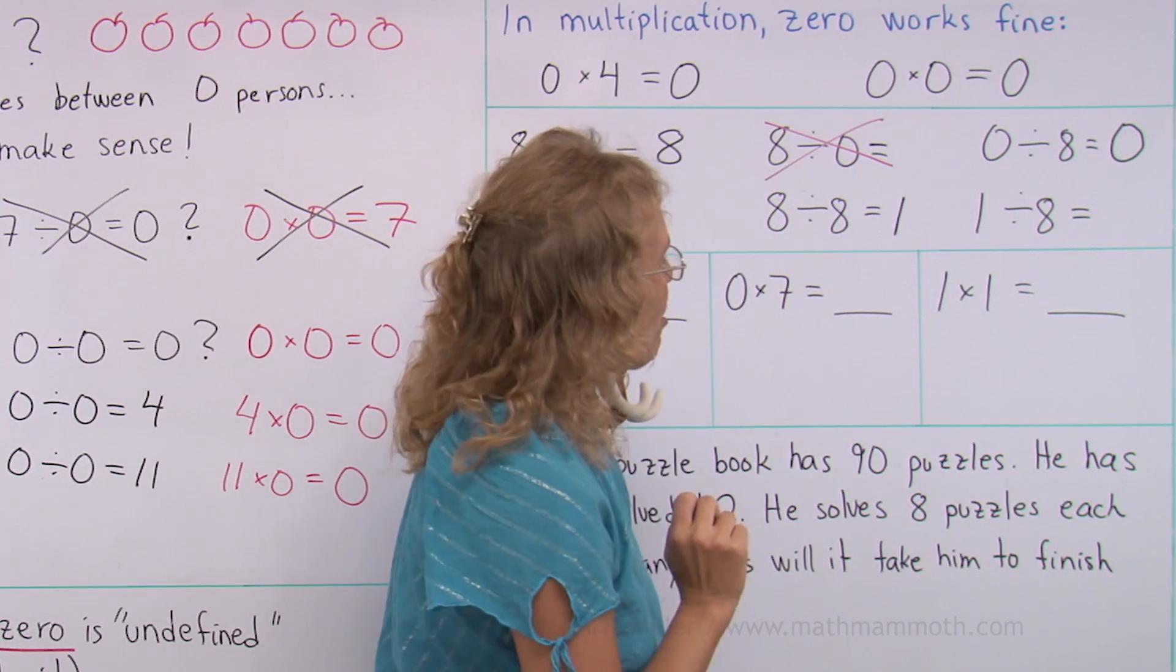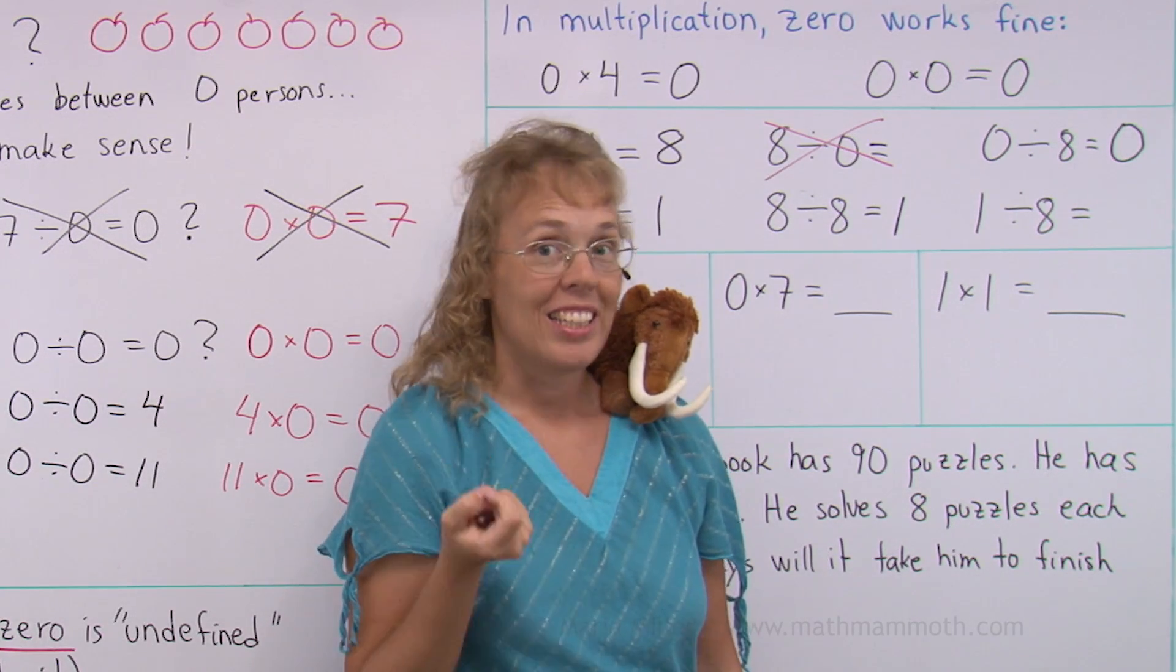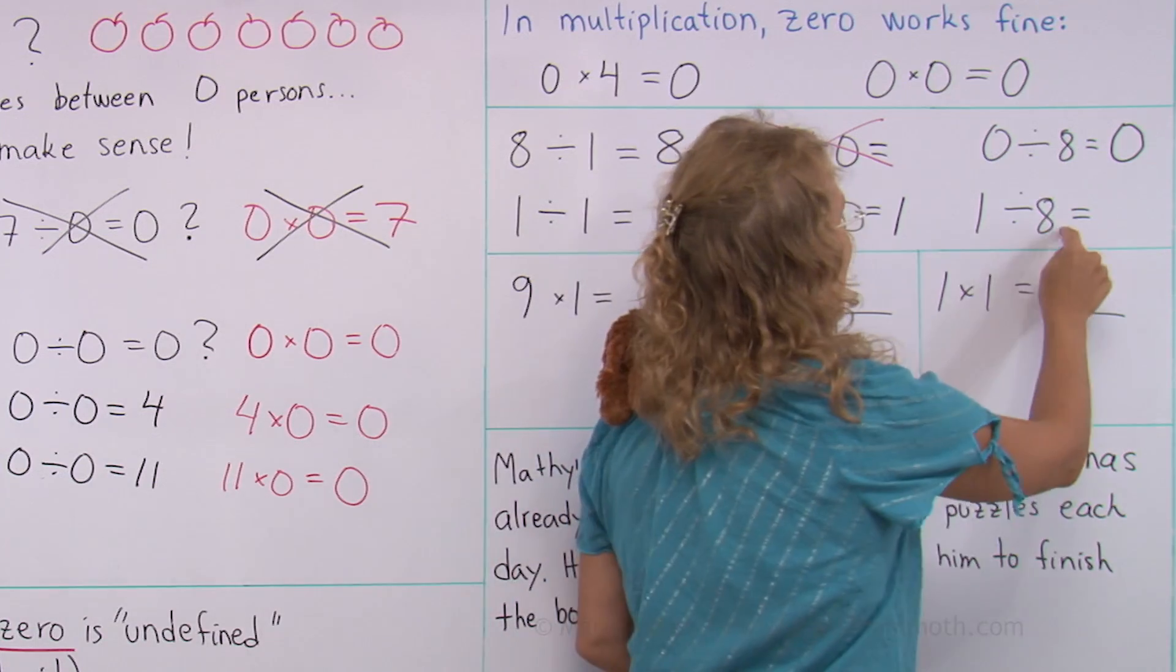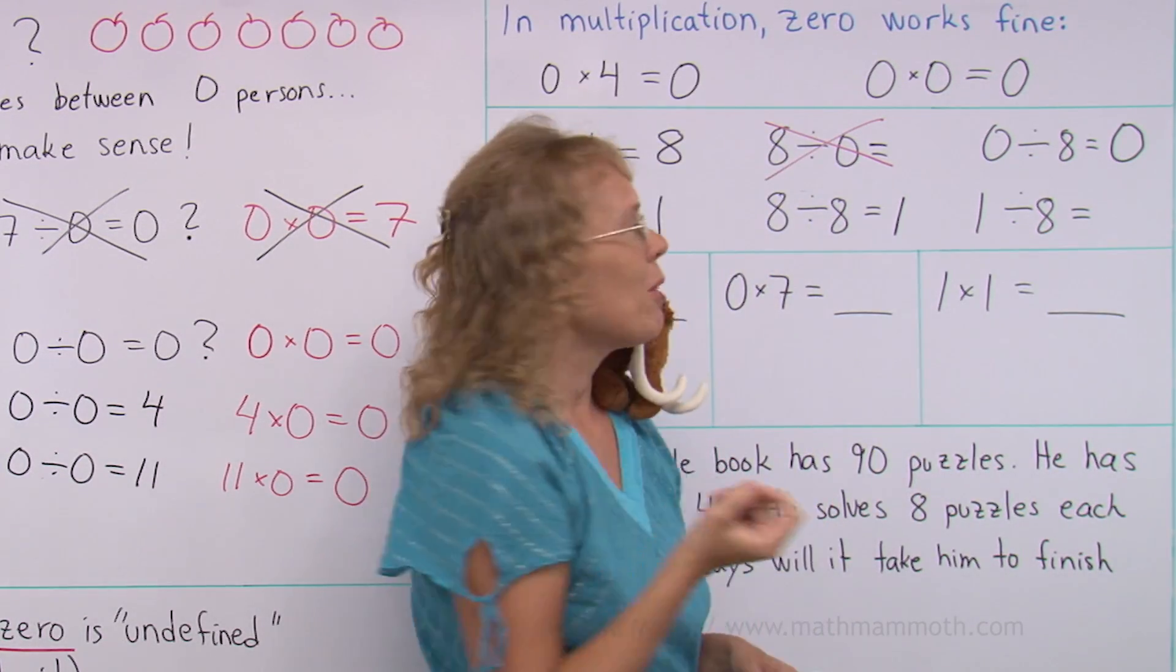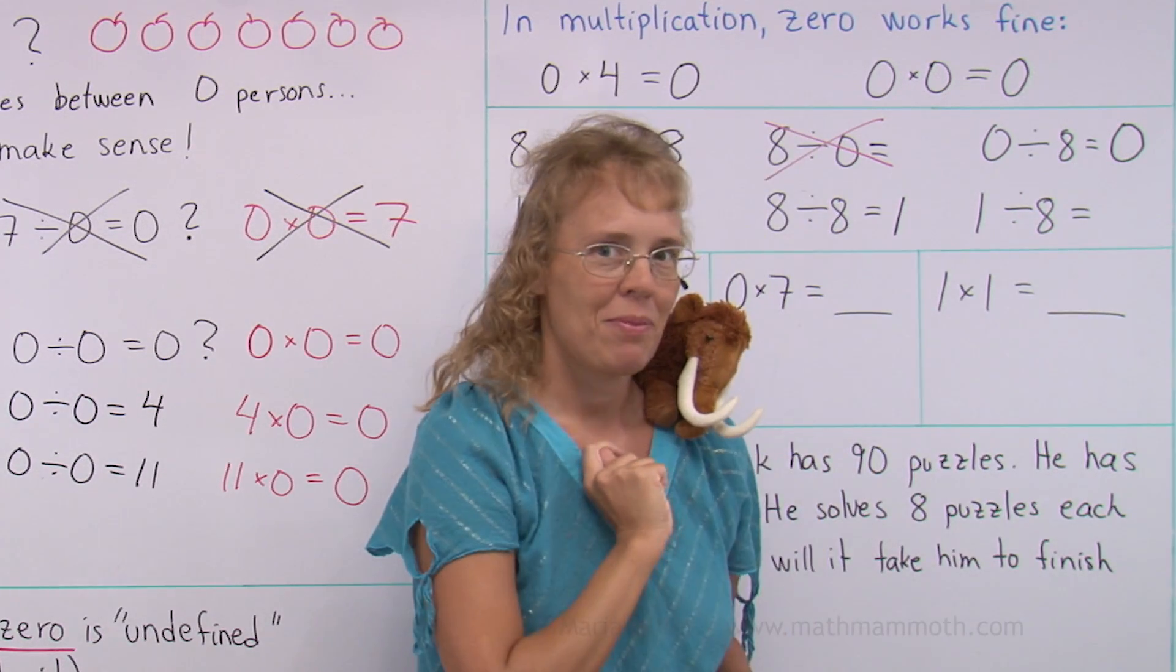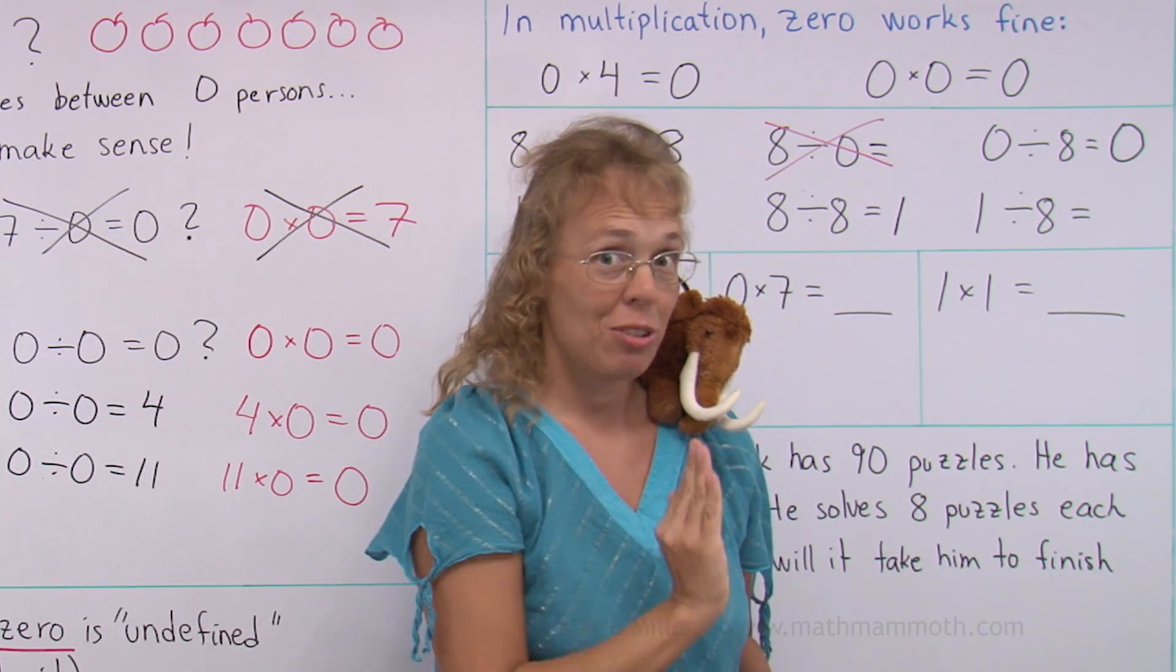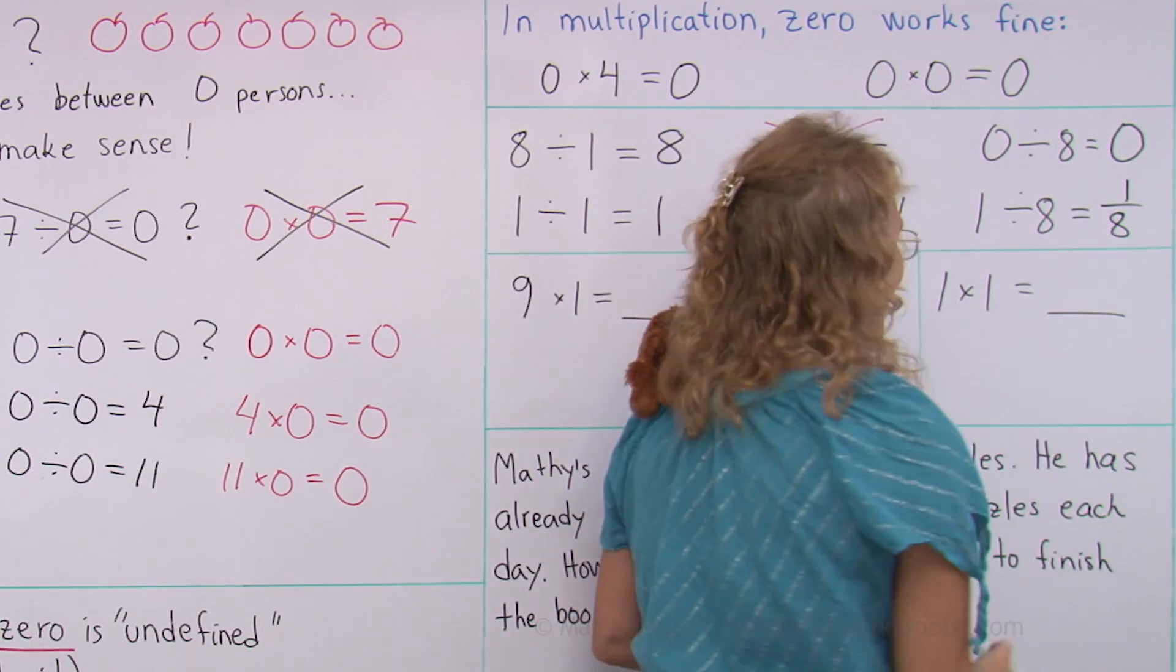That's a trick question in a sense because you haven't studied these kind of divisions in third grade. How many eights are in one? Obviously none. But you can think of it this way. If you have one apple shared between eight people, then you cut the apple into eight parts. And each person gets one eighth, a fraction.